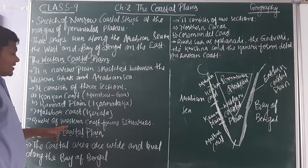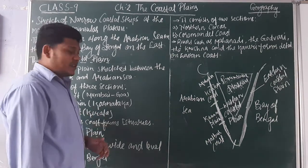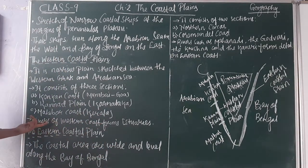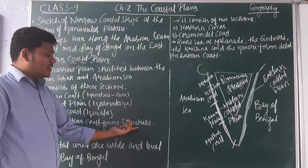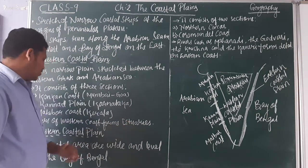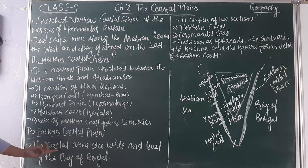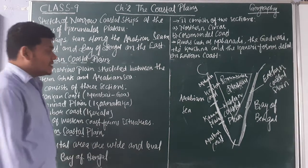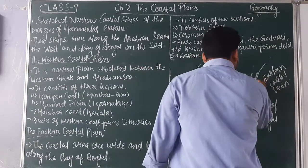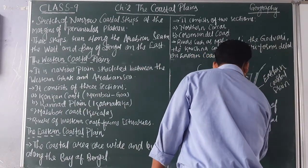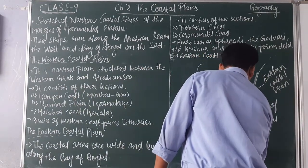On the reverse side of the Western Ghats, a few rivers flow into the Arabian Sea, and at their mouths they form estuaries. Now the Eastern Coastal Plain is wider — it is a little bit wider than the Western Coastal Plain.